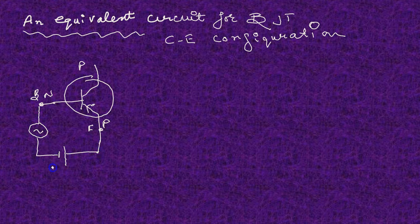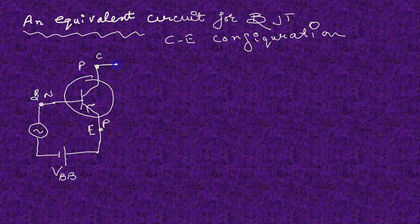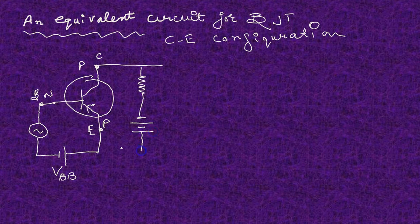This is forward biasing the emitter-base junction. The collector is made reverse biased through the load resistance — this is reverse biasing. Here the output is taken.